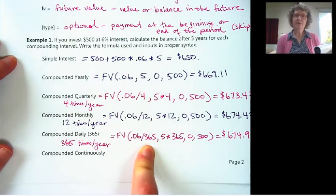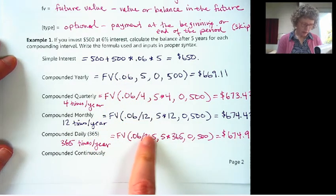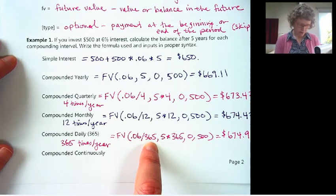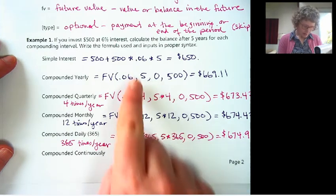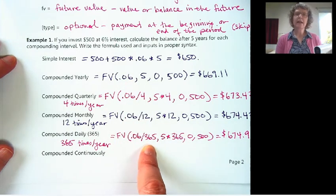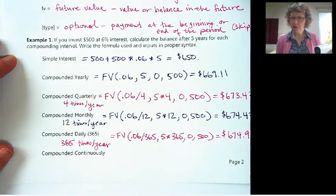Now, we have to use a different formula, because we can't divide a number by infinity. Excel will not like that. So, what this does is, as you let this number approach infinity, it becomes a different function, a different formula.